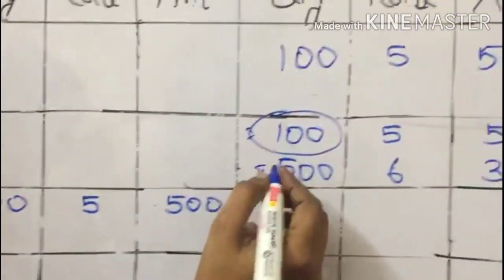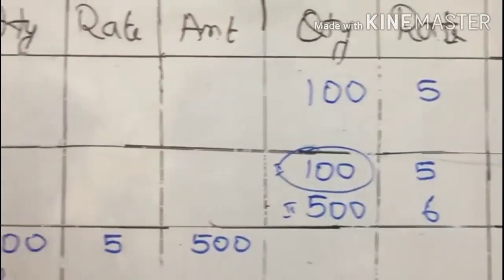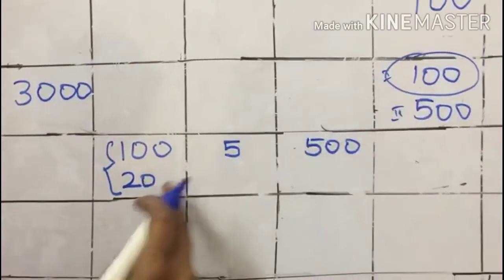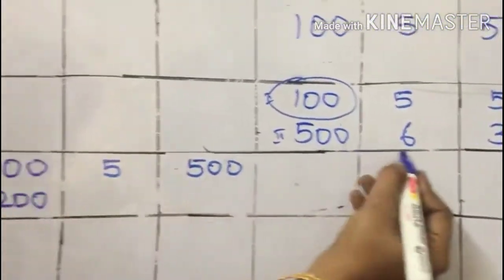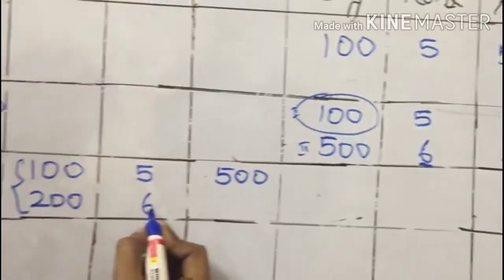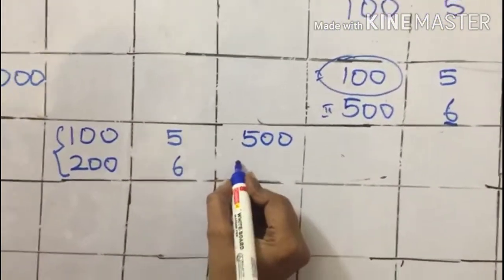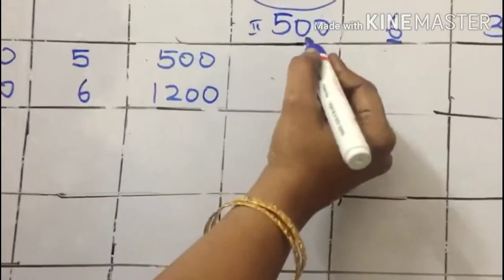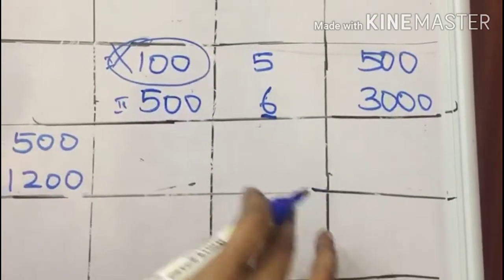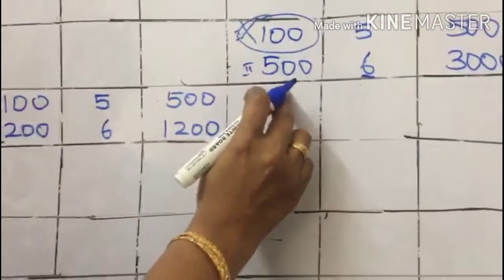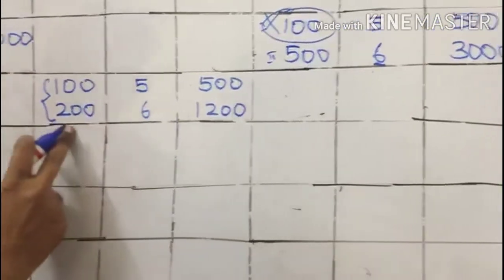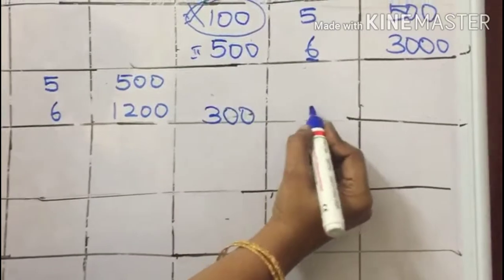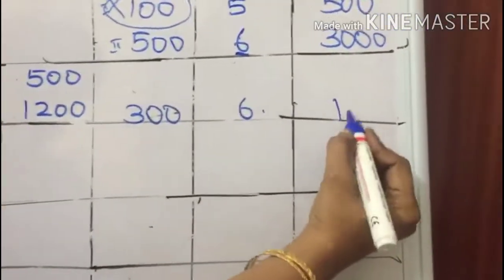The remaining balance of 200 units has to be issued — because totally 300 must be issued: 100 from the first bag and 200 from the second bag. So 200 at the rate of 6, giving 1200. The first bag is now fully used and cancelled. From the second bag, 500 minus 200 issued leaves a balance of 300 at the rate of 6, giving 1800.